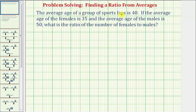The average age of a group of sports fans is 40. If the average age of the females is 35 and the average age of the males is 50, what is the ratio of the number of females to males?